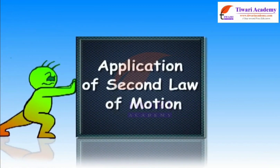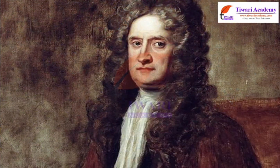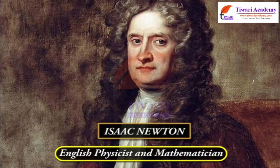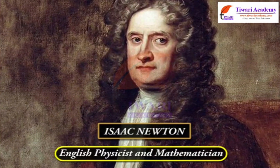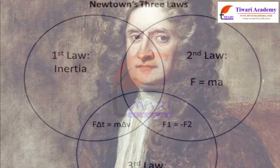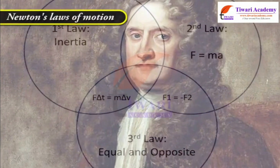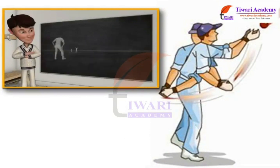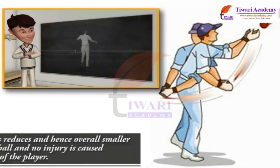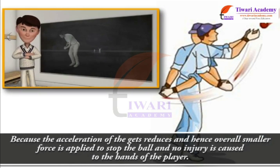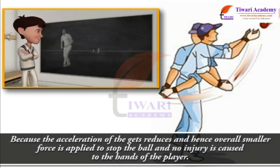Application of Second Law of Motion: A cricket player lowers his hands along with the ball to catch it because the acceleration of the ball gets reduced, and hence a smaller force is applied to stop the ball, and no injury is caused to the hands of the player.